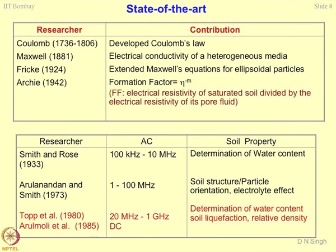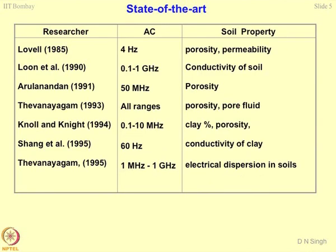Aurel Molli used DC current for studying these properties. The state of the art table gives a very clear picture of what has happened over many years. Porosity, permeability, conductivity, clay content, electrical dispersion — everything has been studied in different frequency ranges. Logan in 1985 started with 4 hertz, which is essentially a DC frequency. The entire gamut of properties has been studied across gigahertz, megahertz ranges and so on.